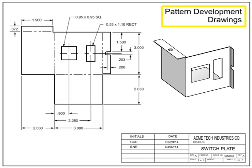Pattern development drawings detail the dimensions of a part when it is flat, as well as the final shape it takes, typically by bending or folding. Pattern development drawings are frequently used where sheet metal, fabric and leather, tubing, plastic, or cardboard is the raw material. Pattern drawings show not only the dimensions of the unfolded item, but also detail where the fold lines are.